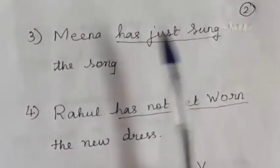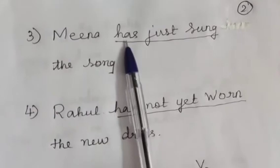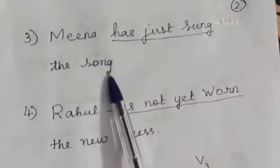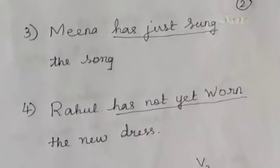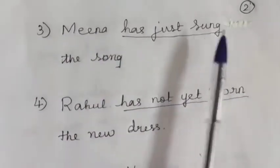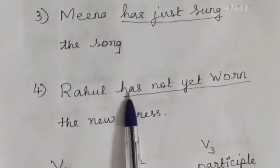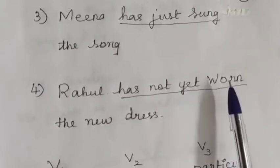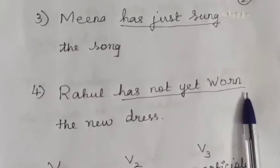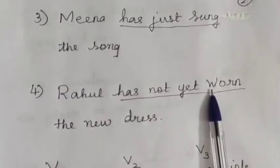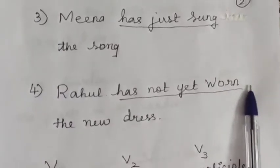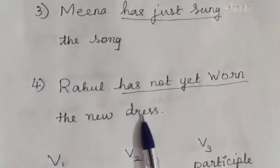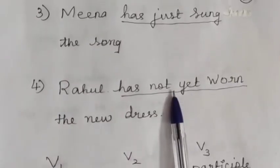Example: 'Mina has just sung the song.' Here, sing-sang-sung; verb 3 is 'sung'. 'Rahul has not yet worn the new dress.' Wear-wore-worn; verb 3 is 'worn'. So in negative sentences with 'yet', we add 'not' after 'has' or 'have'.